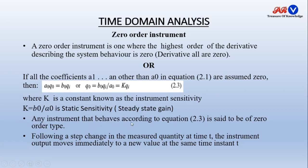Any instrument that behaves according to this equation is said to be of zero order type. Following a step change in the measured quantity at time t, the instrument output moves immediately to a new value at the same time instant t, because b0 and a0 are constants and k is constant. Output directly varies with input, so how our input changes, output will follow that instantly.